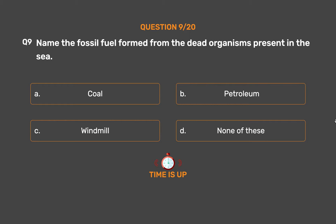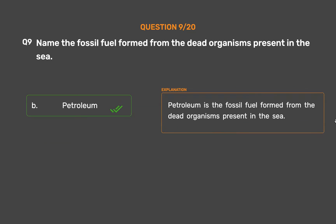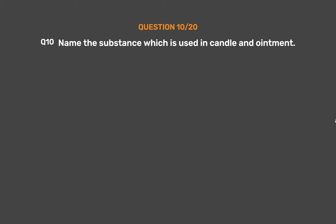The correct answer is Option B: Petroleum. Petroleum is the fossil fuel formed from the dead organisms present in the sea. Question number 10: Name the substance which is used in candles and ointments.